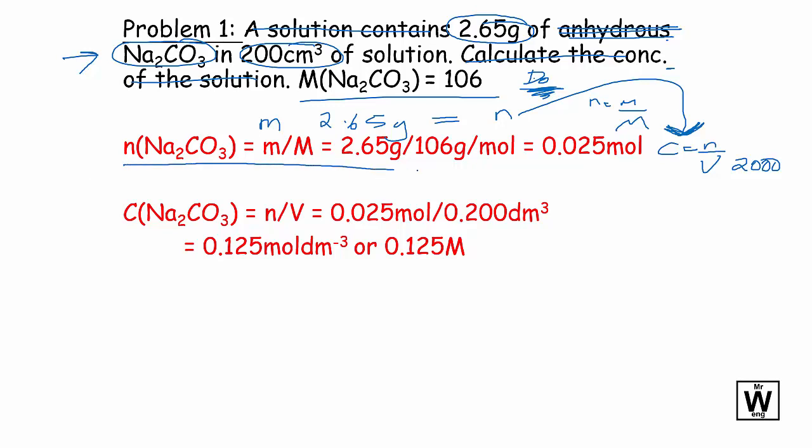So there we have it. Our number of moles is mass over molar mass, 0.025, and so now we can sub that in to C equals n over V and we get 0.125 moles per liter or 0.125M.